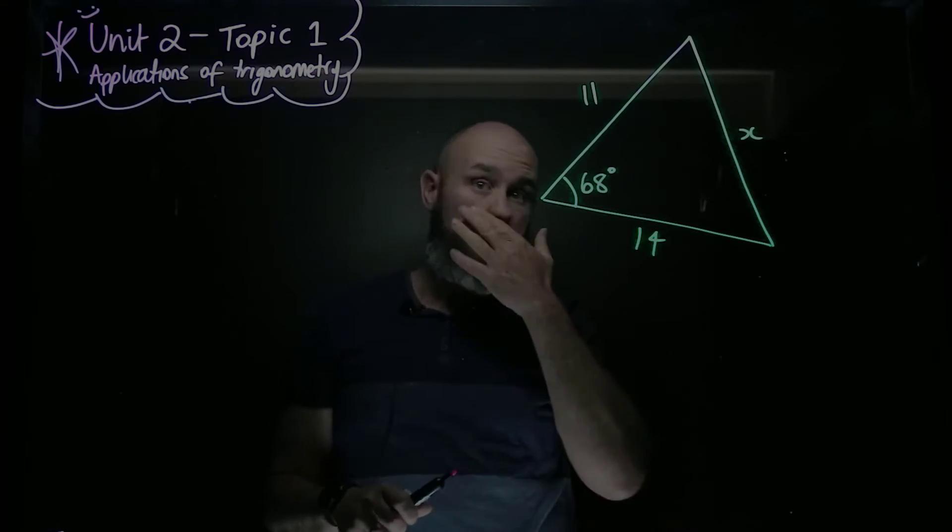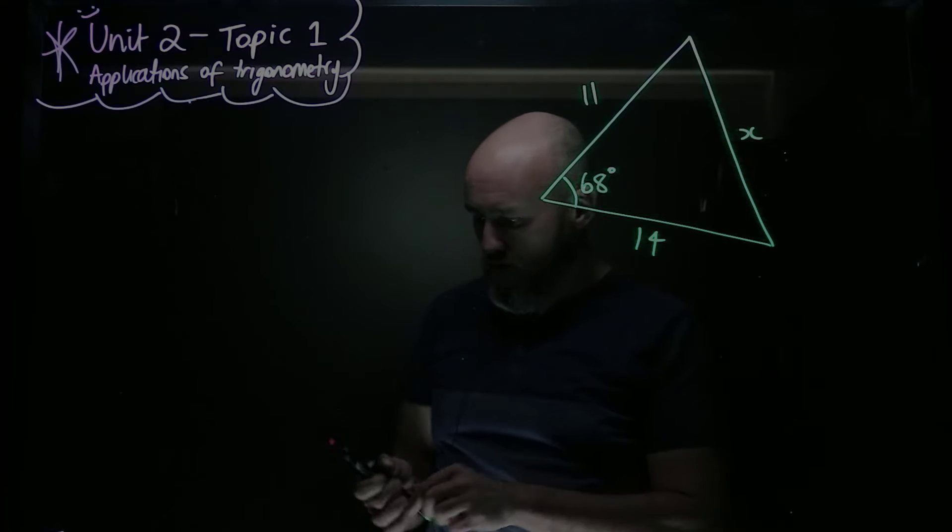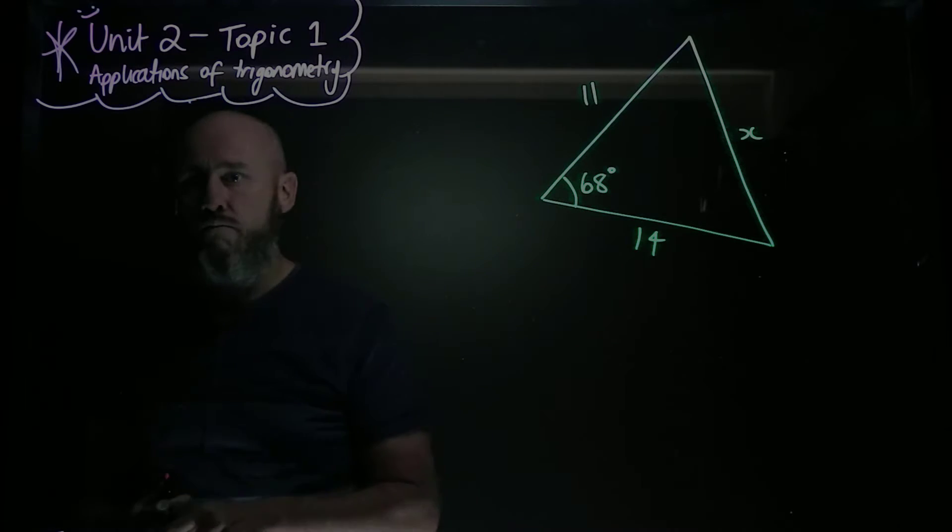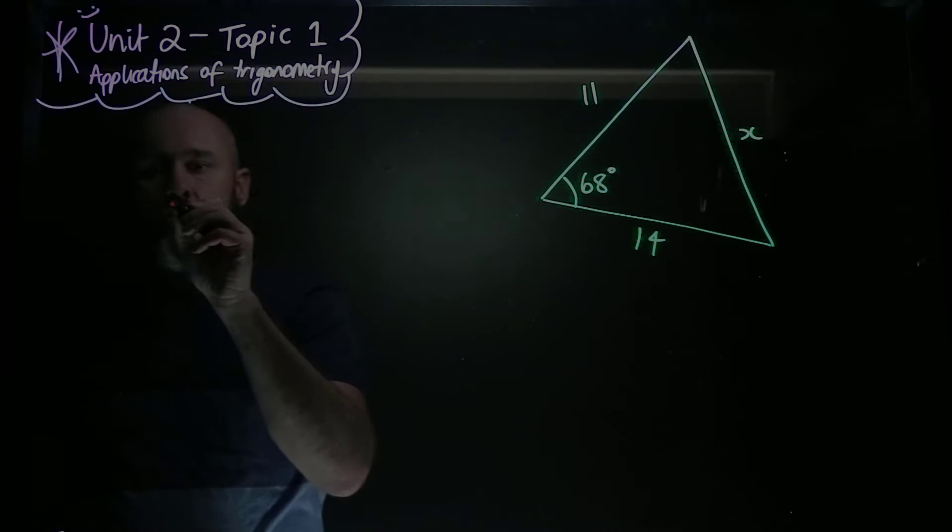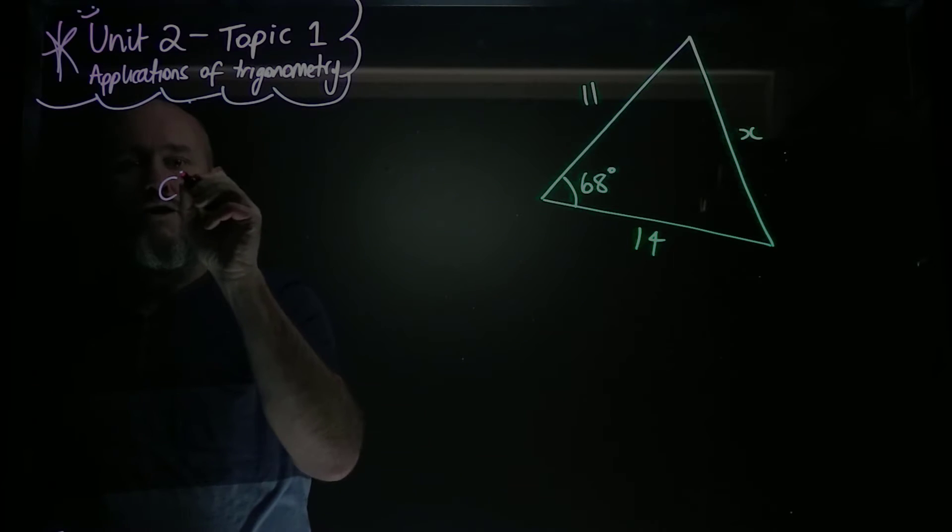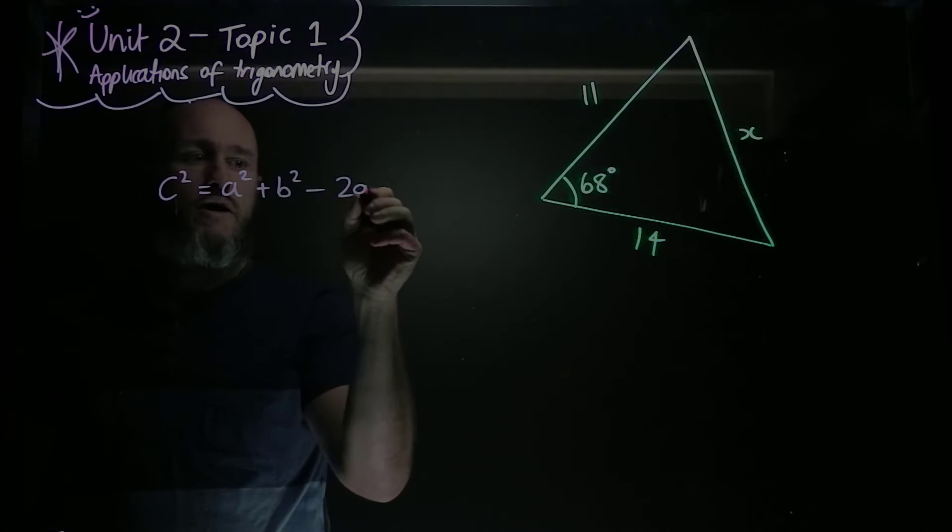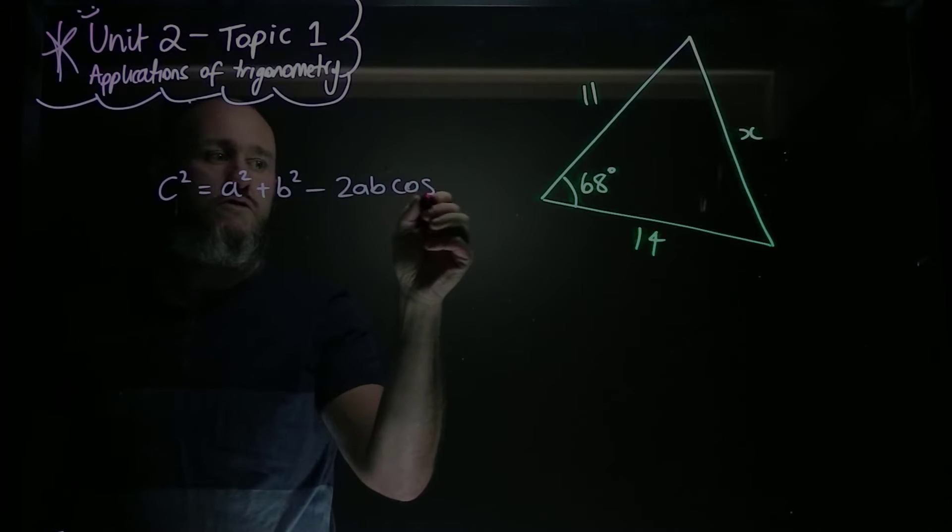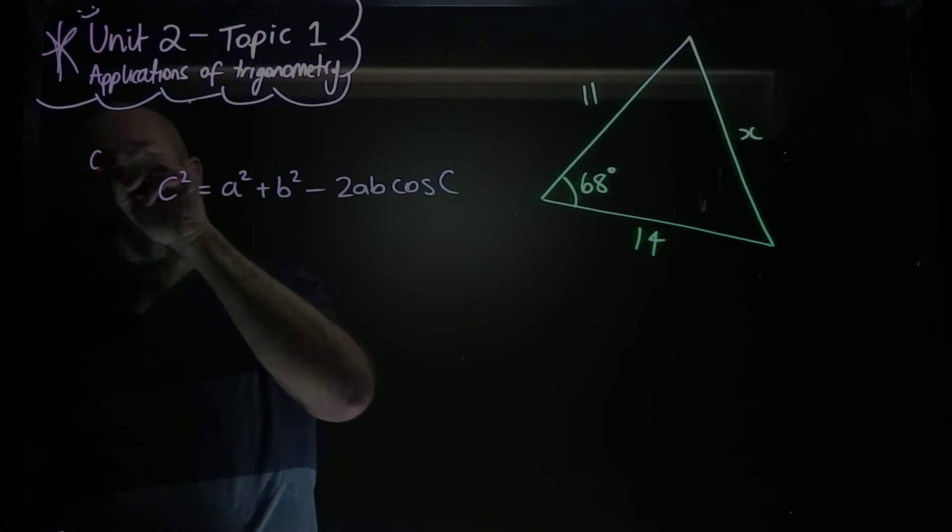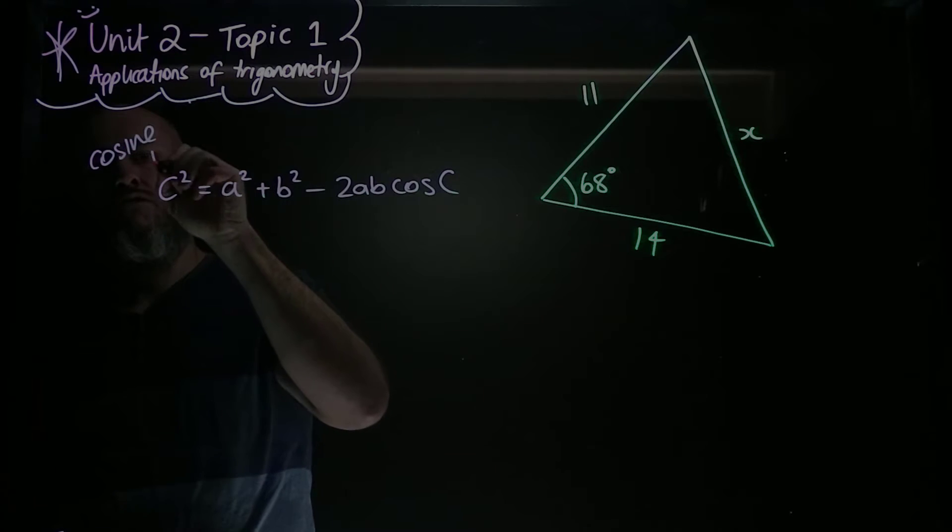This will break into our bearings questions as well with the Sine Rule. So here's the Cosine Rule in one of its forms, and that is that c squared is equal to a squared plus b squared minus 2ab cos C. So let me just write down here, Cosine Rule.